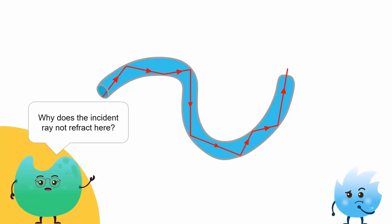Do you know why the incident ray is not refracted here? Well, we can understand the reason for this once we understand the process of total internal reflection.